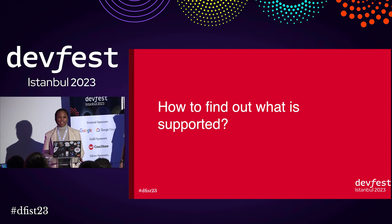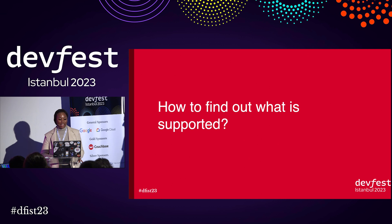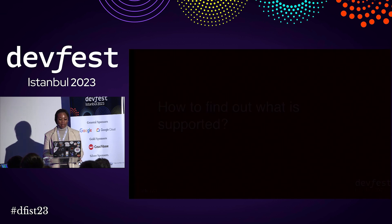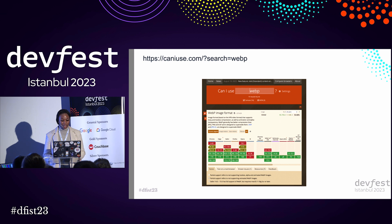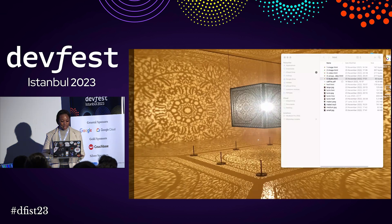Today we spoke about many different file formats, from audio to image, and you might be wondering how you will keep track of which ones are supported and aren't supported. I would recommend you use the website caniuse.com so that you can keep track of which formats are supported and which aren't. I'll show a demonstration of how it works now.